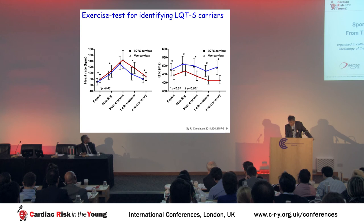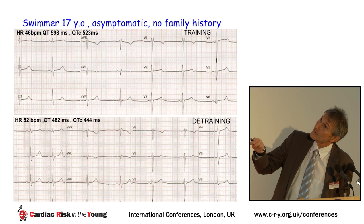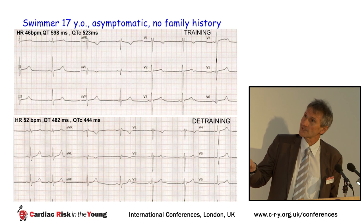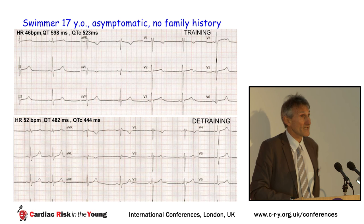In the case of an asymptomatic swimmer with no family history, corrected QT was over 500 milliseconds during intensive training of 16 hours per week. After four months of detraining, corrected QT fell to 440 milliseconds. While it is not easy to be certain of abnormal QT duration, an increase from 440 to 520 milliseconds following prolonged training is unlikely to be physiological.